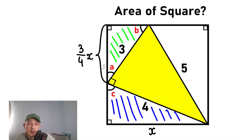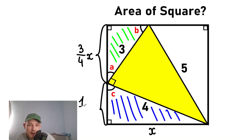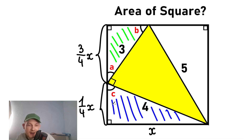Let's plug in (3/4)X instead of A. So this side of the top triangle equals (3/4)X. Because this side equals X and this is a square, the other side is also X, meaning this small remaining part equals (1/4)X — since (3/4)X plus (1/4)X equals X. Now let's consider the bottom blue triangle. We know the first leg, the second leg, and the hypotenuse, so let's apply the Pythagorean theorem to find X.